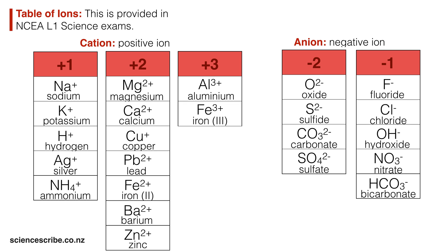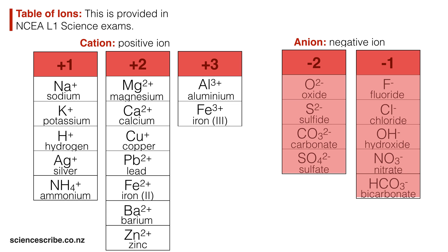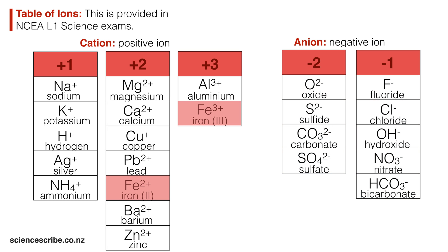Don't worry — on the left you'll see that the cations have names that are just the same as their atoms. It's only really the anions that have slightly different names. For example, instead of calling it the fluorine ion it's called the fluoride ion, and instead of calling it the chlorine ion it's called the chloride ion. Also notice that iron appears twice in the cations — be careful: Fe2+ is called iron 2 and Fe3+ is called iron 3. I also want to point out the ammonium ion — don't confuse this with ammonia, which is something else.